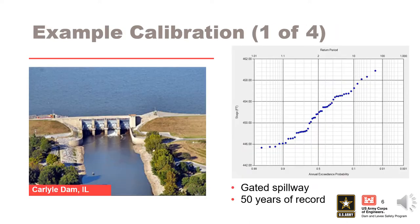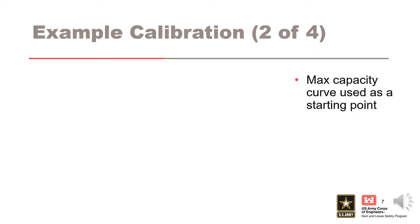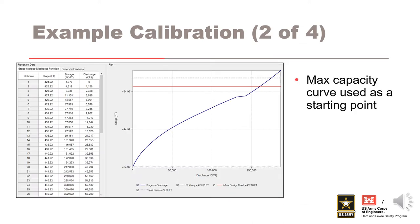For this example calibration, we will look at Carlisle Dam located in southern Illinois. This structure is primarily for flood control and has four gates that regulate flow over the spillway. For this project, we have 50 years of peak stage data, which can be seen on the empirical frequency curve on the right. For the first simulation, the maximum discharge capacity curve was used as the starting discharge curve for the RMC-RFA model. The stage-storage-discharge curve was developed based on published rating curves for the project. This curve is expected to be lower than the observed points since we know the project would not release maximum discharge during a flood event.